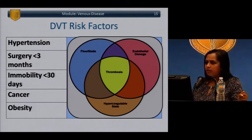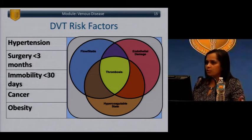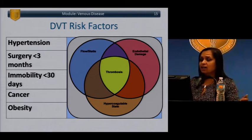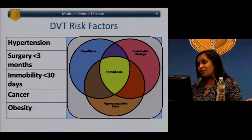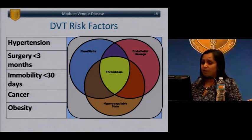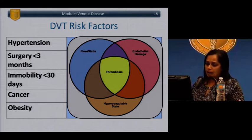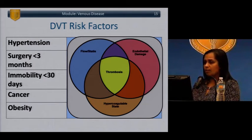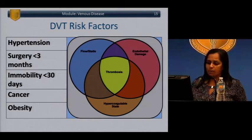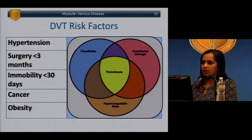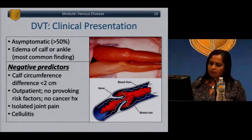Deep vein thrombosis is a very common disease in surgical patients. Important risk factors include hospitalization, hypertension, recent surgery, immobility, cancer, and obesity. Virchow's triad is important: stasis, endothelial damage, and hypercoagulable state — any of these pathophysiologic conditions predispose to DVT. More than 50% of patients with DVTs may be asymptomatic; swelling of the calf or ankle is probably the most common finding.